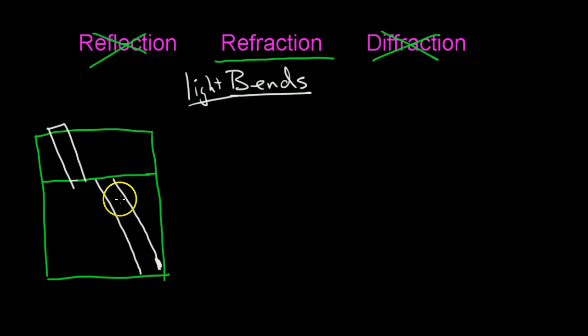Same thing if you go to a swimming pool and you look at your friend down in the pool — you can see that your friend's upper body appears separated from his lower body, and you know that's not true.